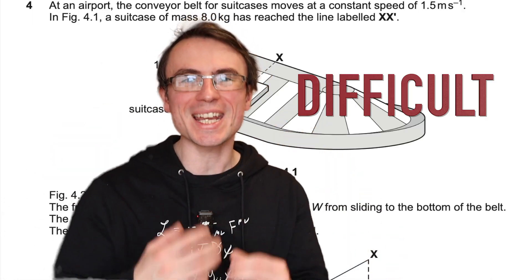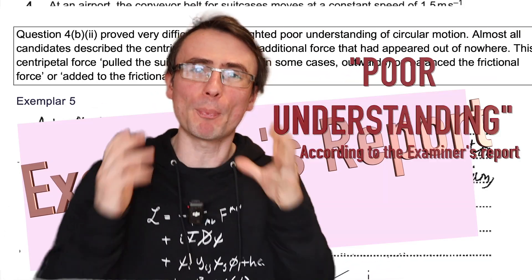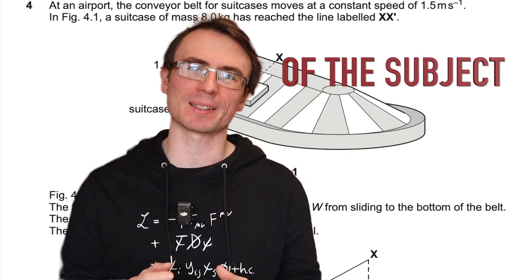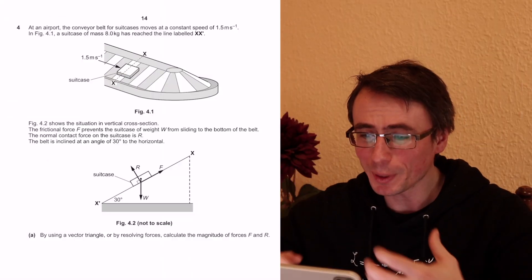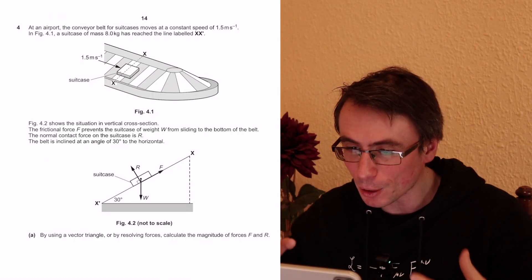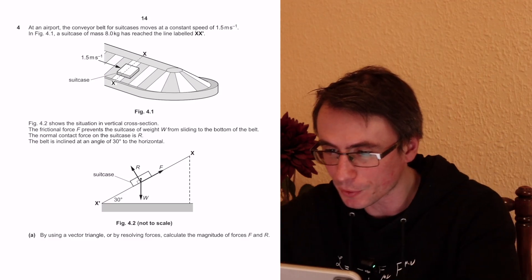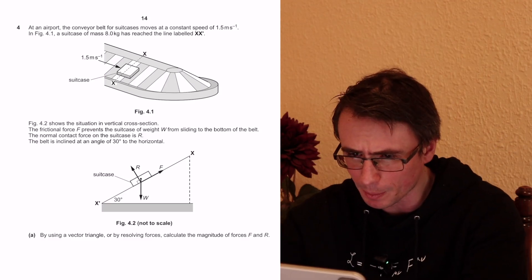This A-level question proved really difficult and highlighted poor understanding of the subject. So here is the actual question. We are at an airport and the conveyor belt for suitcases moves at a constant speed of 1.5 meters per second.